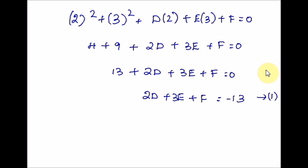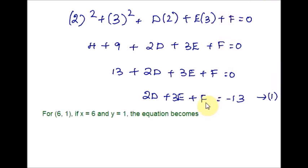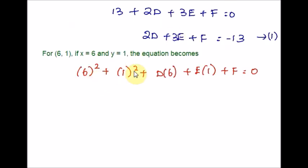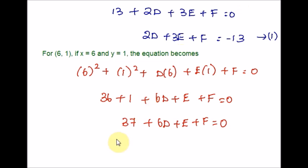Now let us plug in the second pair, x = 6 and y = 1, into the same general form of the circle. Working out the squares — 6 squared and 1 squared give 37. Subtracting 37 from both sides, we get Equation 2.